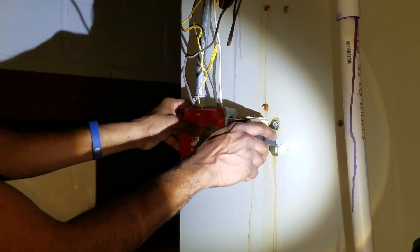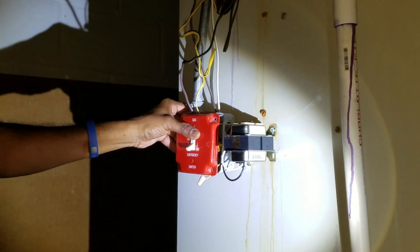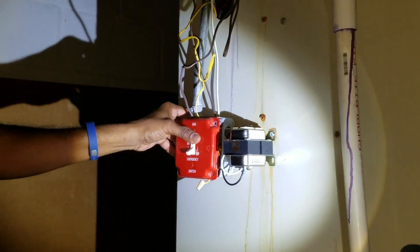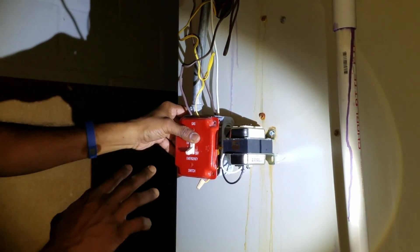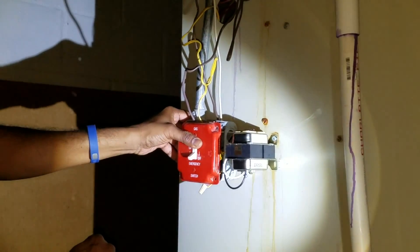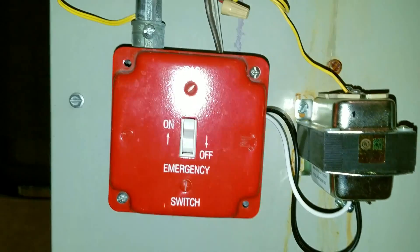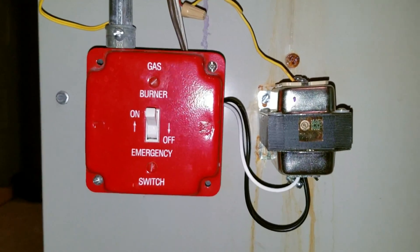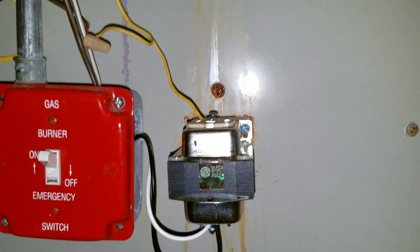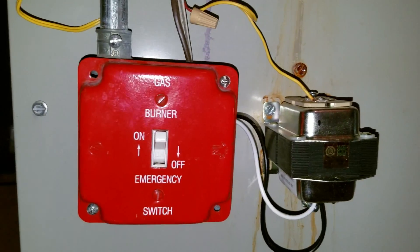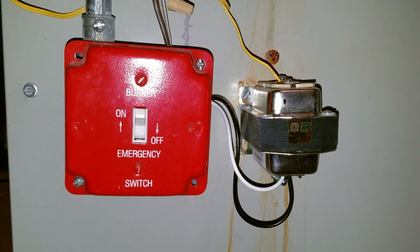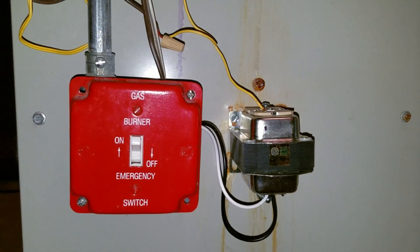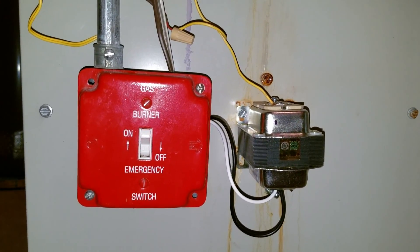So once the faceplate is installed, we are done with installation of the new transformer. I will show you once it is done and fully installed. And this is how the final version of the installation looks—the new transformer connected and switched on. The air conditioning system, everything is working fine.